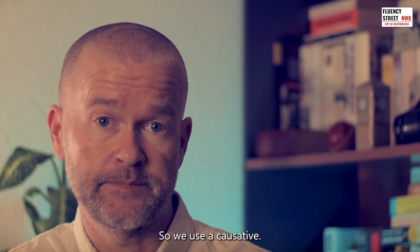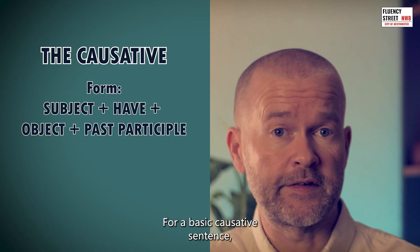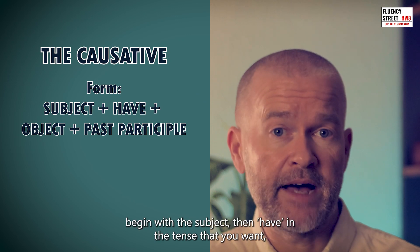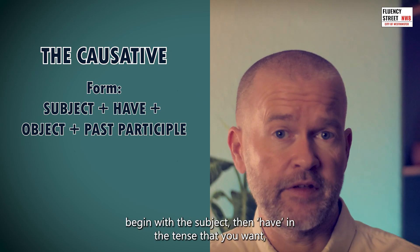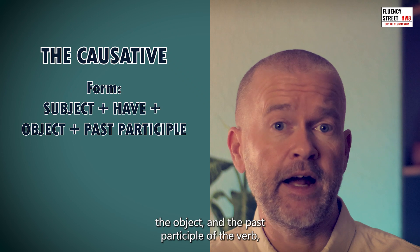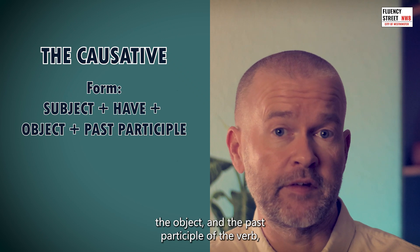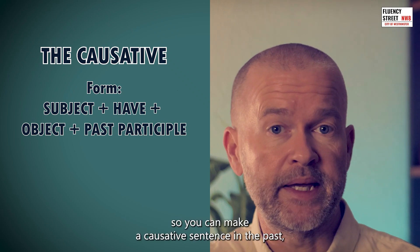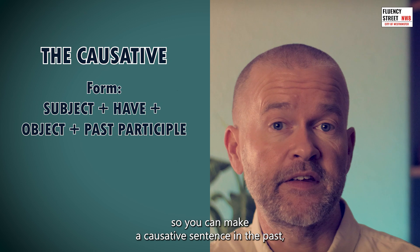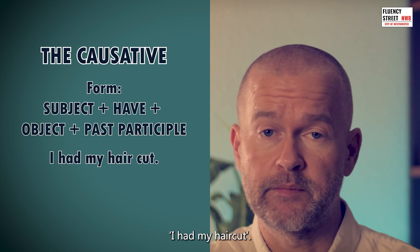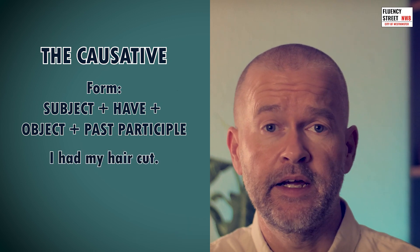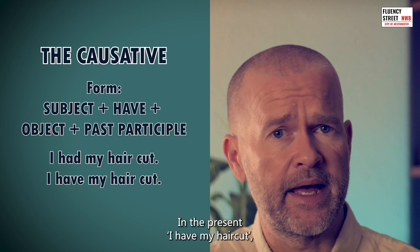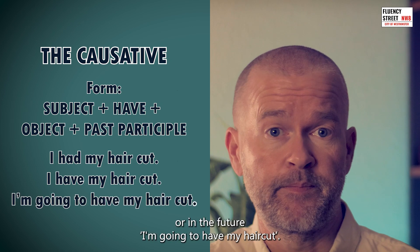So we use a causative. For a basic causative sentence, begin with the subject, then 'have' in the tense that you want, the object, and the past participle of the verb. You can make a causative sentence in the past: 'I had my hair cut.' In the present: 'I have my hair cut.' Or in the future: 'I'm going to have my hair cut.'